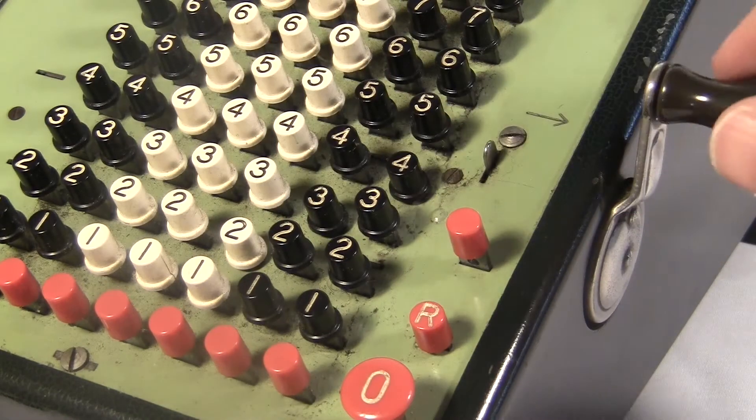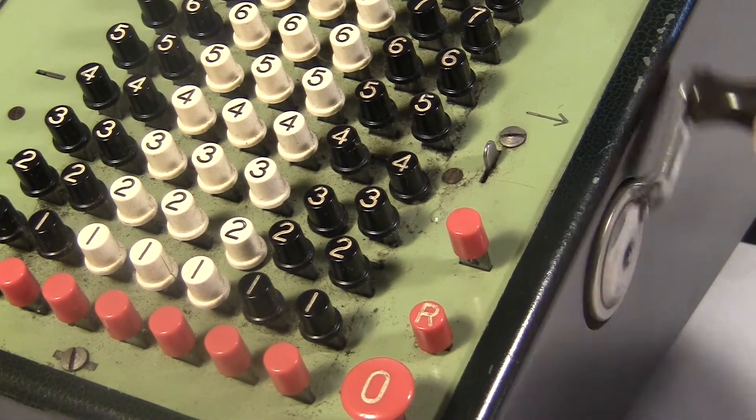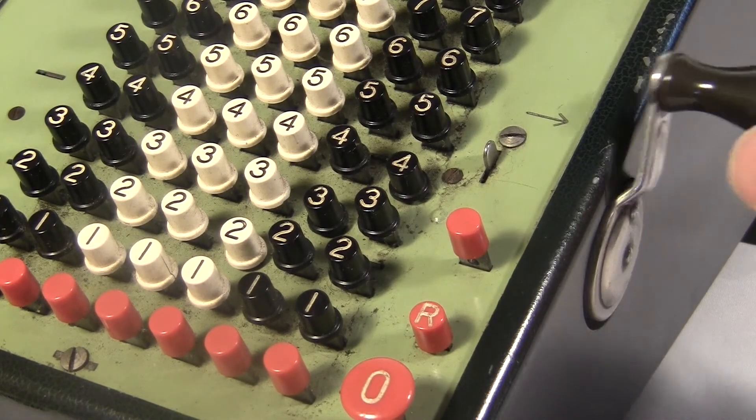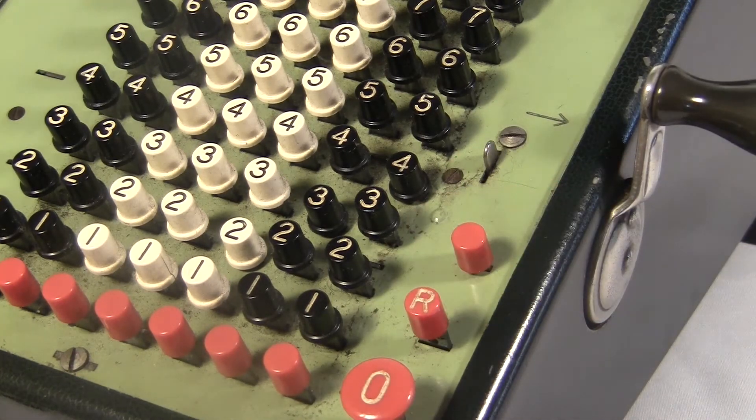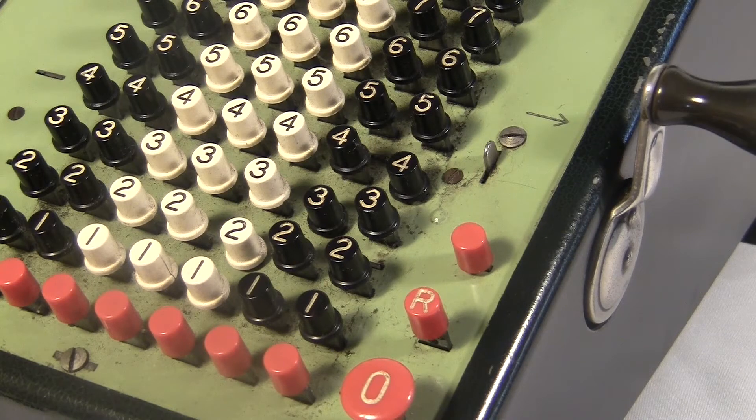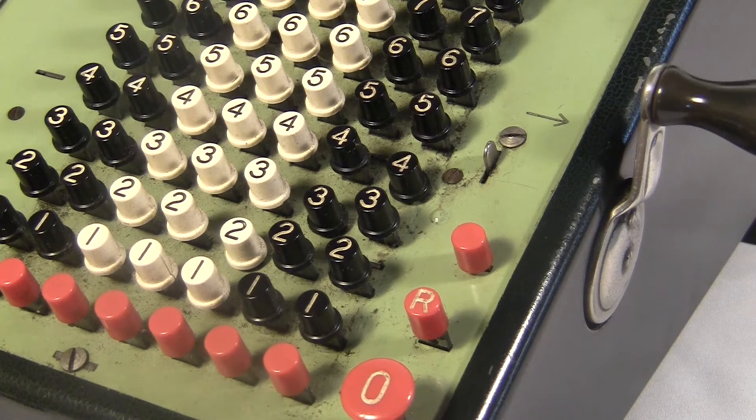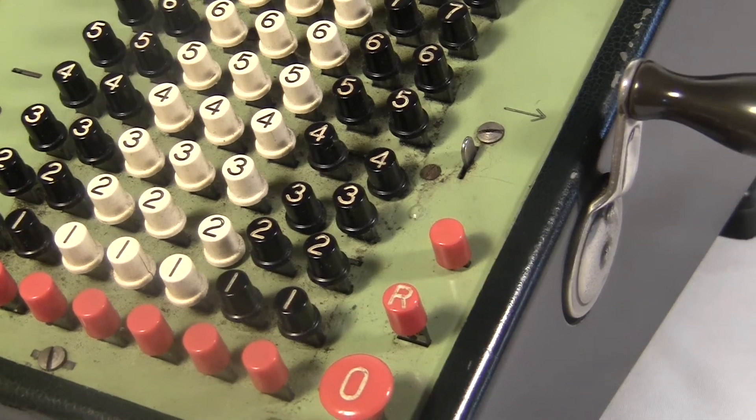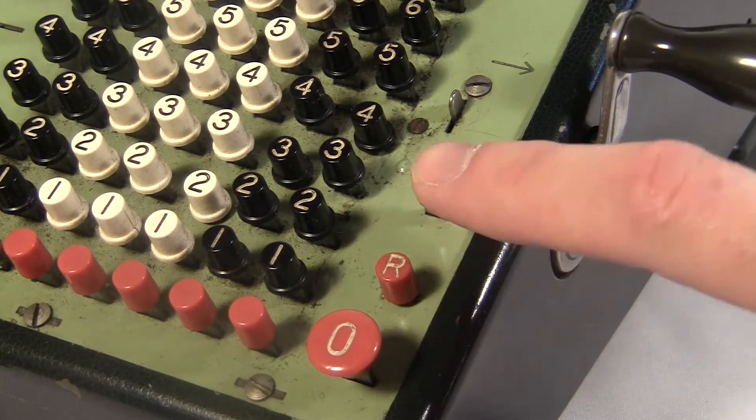This little R button is the repeat switch. If you have the repeat on, then the numbers won't pop up after you turn the crank. You can use this if you want to add or subtract the same number over and over again, like when you're doing multiplication. This blank button here goes with the repeat. For the repeat mode, you push the R down. For the normal mode, you hit the blank one.